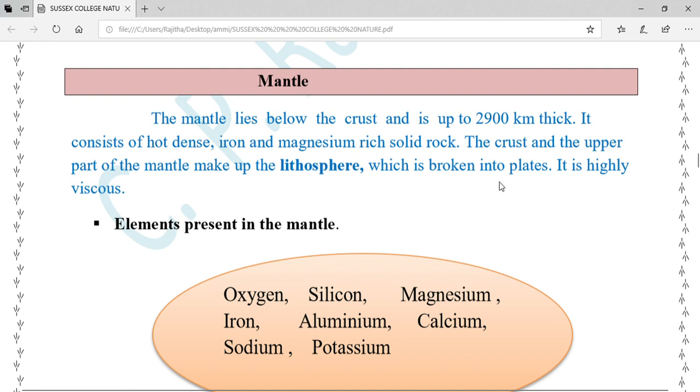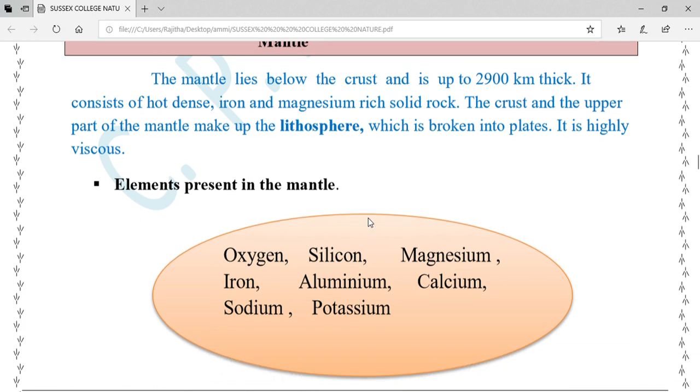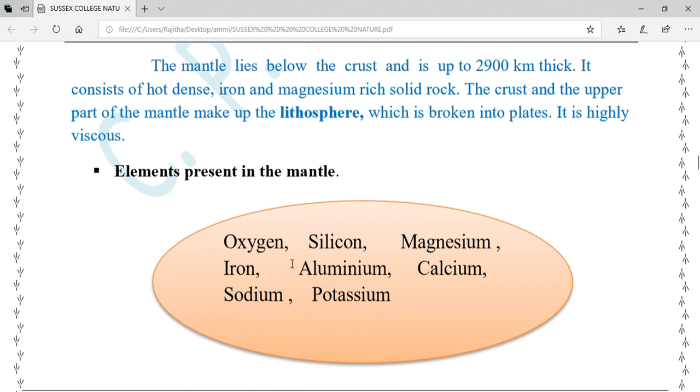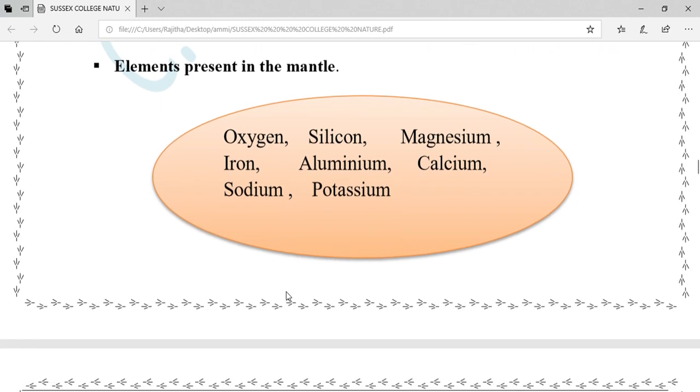What are the elements present in the mantle? Oxygen, silicon, magnesium, iron, aluminum, calcium, sodium, and potassium.